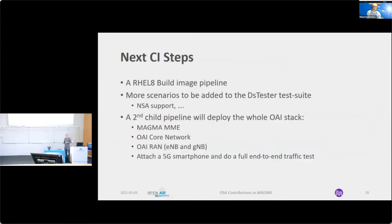Our next steps include adding another pipeline to build Red Hat 8 images. We also need to add more scenarios to the DSTester test suite — for example, NSA support with the pull request currently open by Mohit, and later on NB-IoT, X2 handover, and so on for any future features we will be adding.